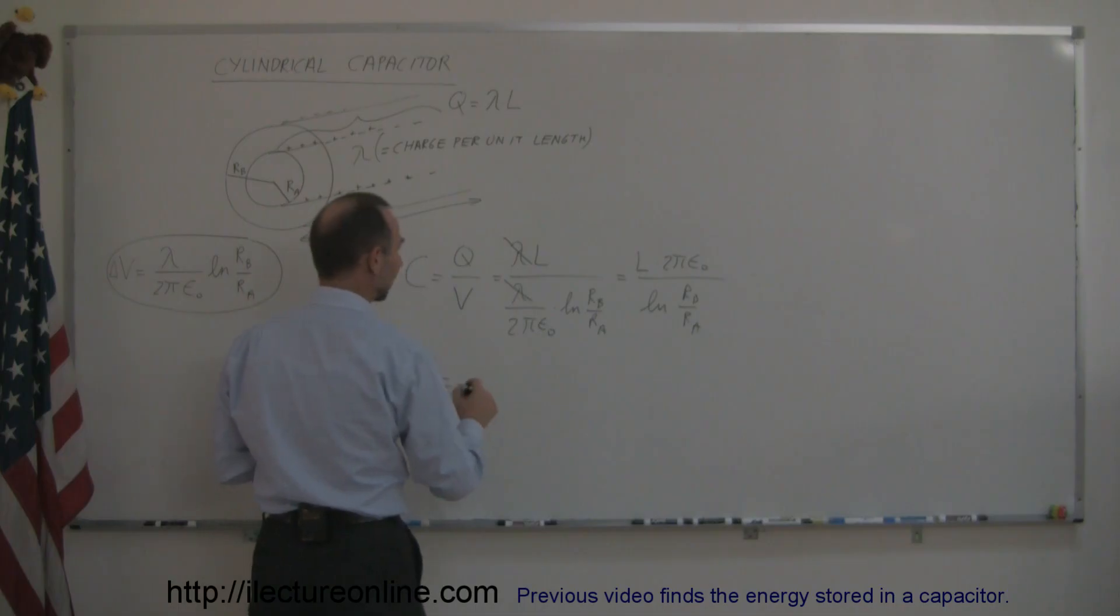And written properly in the right order, you would write this as the capacitance is equal to 2 pi epsilon sub nought, times the length, divided by the natural log of the outer radius, divided by the inner radius.